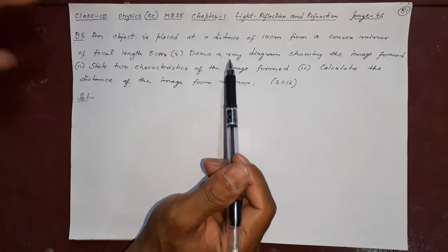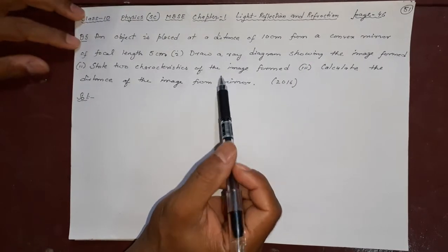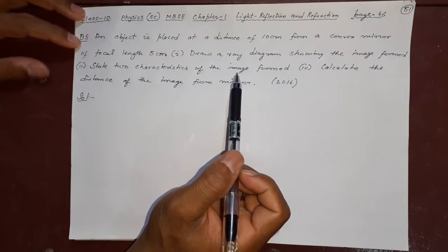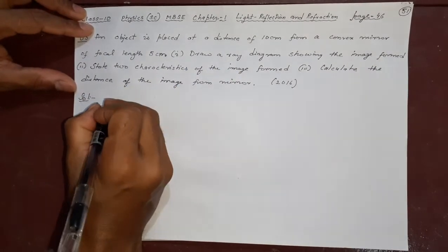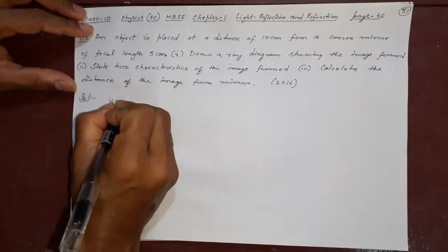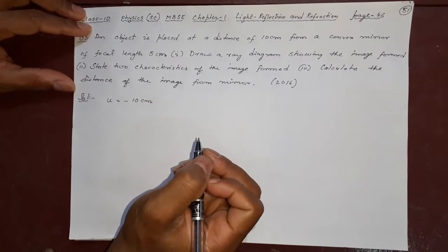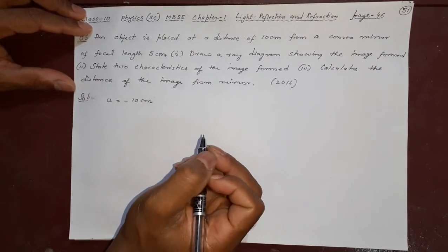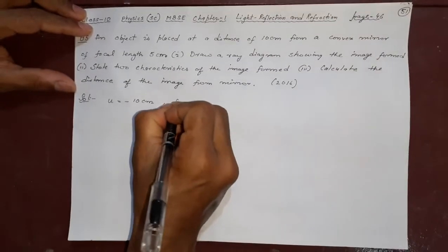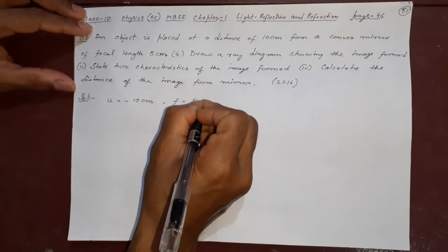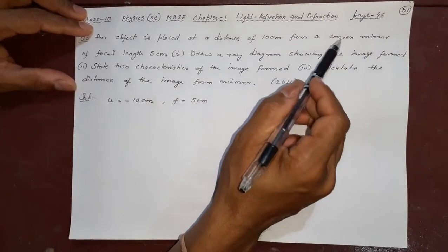Question number 5 is about a mirror, so you are going to use the mirror formula here. An object is placed at a distance of 10 cm. Object distance is always negative because it is kept on the left side of the mirror or the lens. It is a convex mirror, so F should be positive — F is equal to 5 cm, and you need not write minus here because it is a convex mirror.